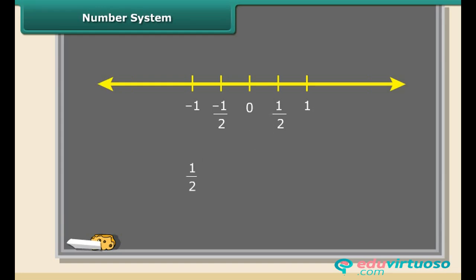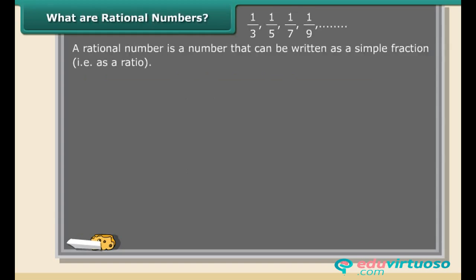Students, what about one by two — is it a whole number, natural number, or an integer? You can see one by two lies between zero and one. We call it a rational number. A rational number is a number that can be written as a simple fraction, that is, as a ratio. So a rational number looks like p upon q.